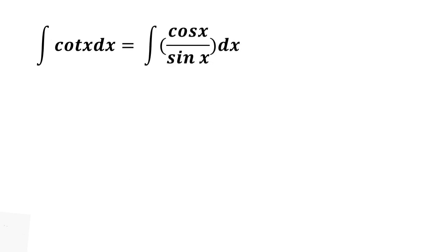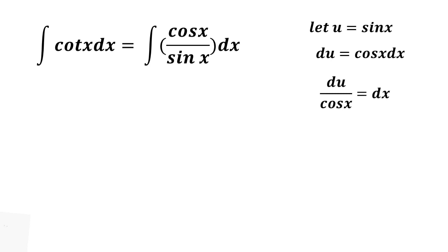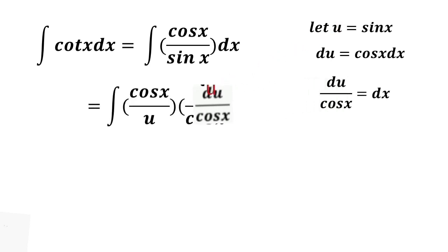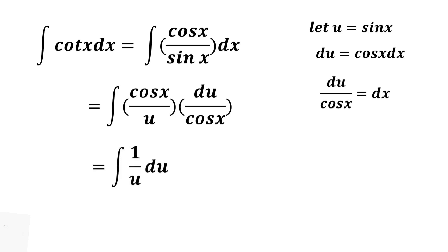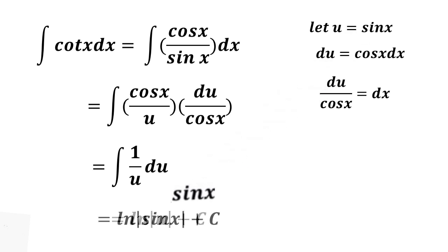To find the integral of cotangent x dx, we use the identity cotangent x equals cosine x over sine x. Let u equal sine x, so du is equal to cosine x dx, meaning du over cosine x is equal to dx. Substituting u for sine x, we have the integral of cosine x over u times du over cosine x. Cancel cosine x, giving the integral of 1 over u du. This equals ln of the absolute value of u. Substituting back sine x for u, we have ln of the absolute value of sine x plus c as the integral of cotangent x dx.